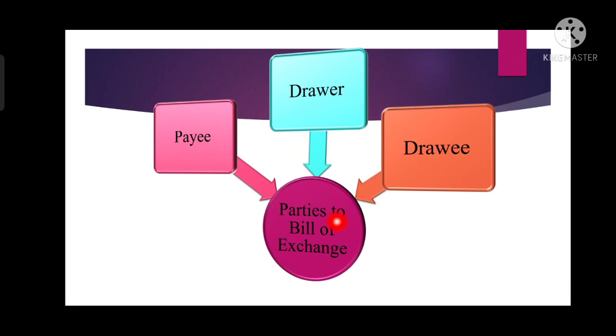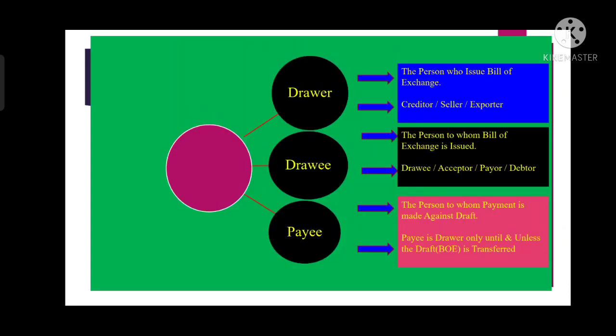Now we will talk about the parties involved in a bill of exchange. Basically there are three types of parties in a basic bill of exchange transaction: the payee, the drawer, and the drawee. The drawer is the one who draws or issues the bill of exchange. The drawer is basically an exporter or seller — also called the bearer or creditor. These are the multiple names of the drawer — the drawer is basically the seller who issues the bill of exchange.